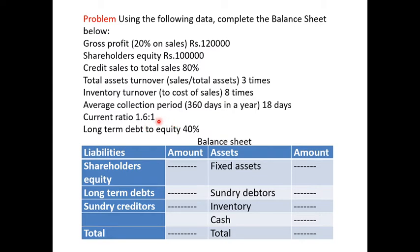With the current ratio, we can calculate current assets and current liabilities. Long-term debt to equity is 40%. Shareholders' equity is given as 1 lakh, so long-term debt is 40% of shareholders' equity. With the help of all this information, we need to prepare the balance sheet.